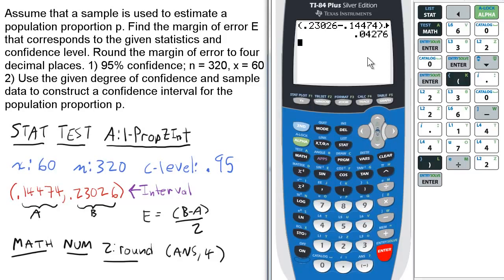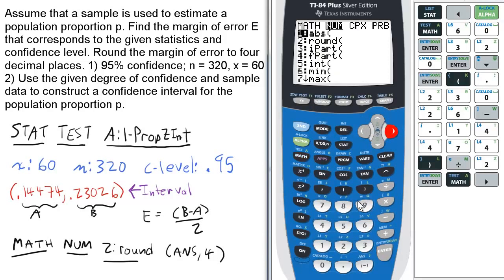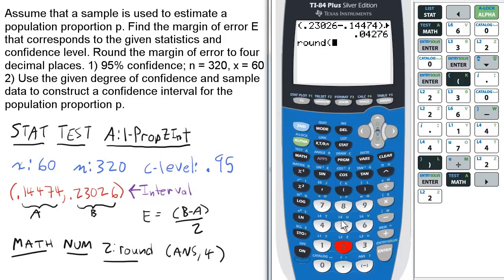If you want to round it to four decimal places, press MATH, select NUM, select 2 for round. We want to round the answer,